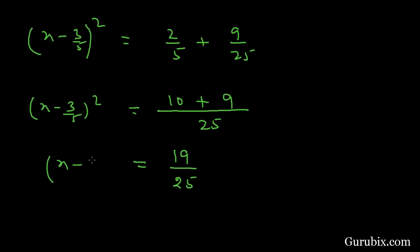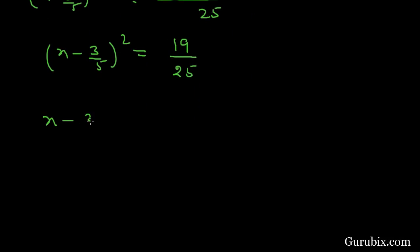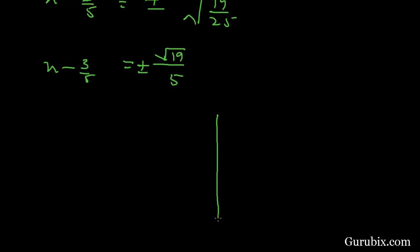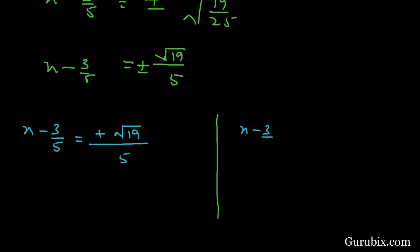This means (x minus 3/5)² equals 19/25. Taking the square root of both sides, x minus 3/5 equals plus or minus the square root of 19/25, which is plus or minus √19 over 5. Now we have two conditions: if we take the positive value, x minus 3/5 equals positive √19/5; if we take the negative value, x minus 3/5 equals negative √19/5.